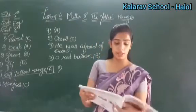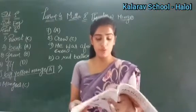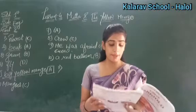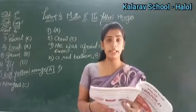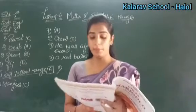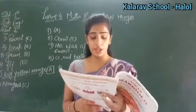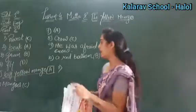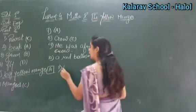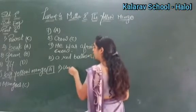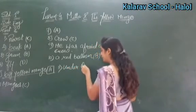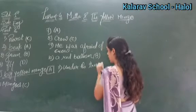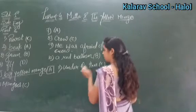Question 11: Where was the red balloon? Options are in the tree, behind the tree, under the tree, or up the tree. The red balloon was under the tree. So here option C is correct.